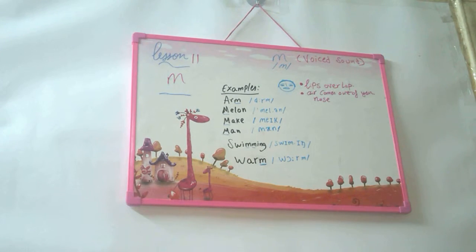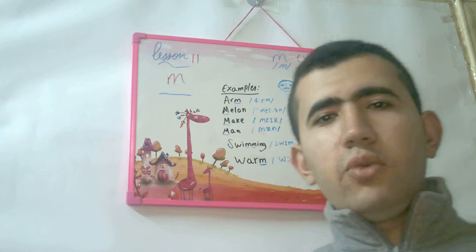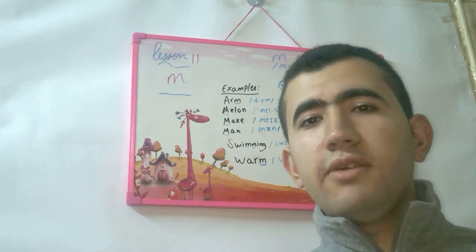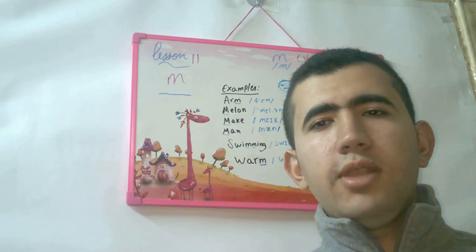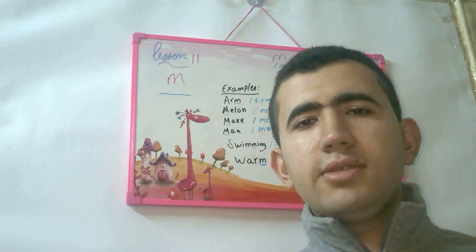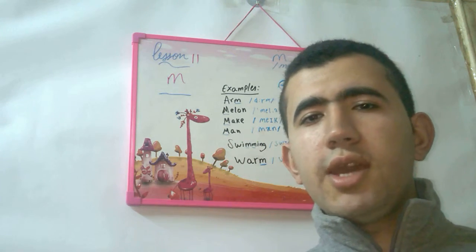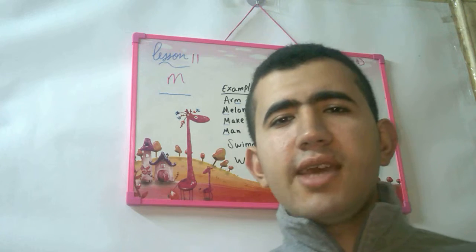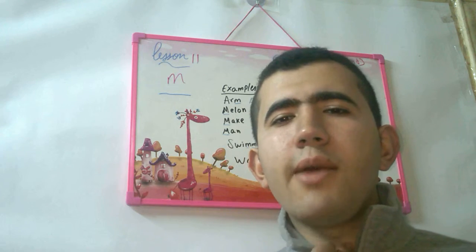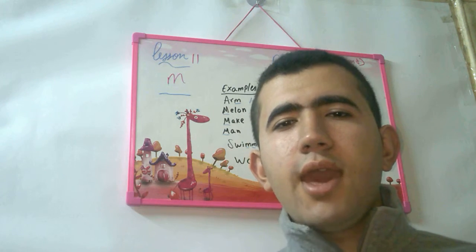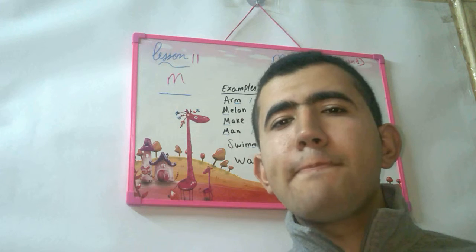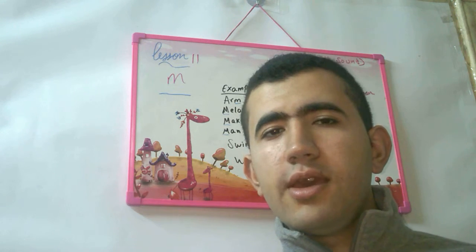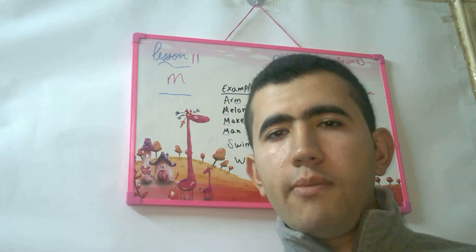Hello everyone in the world, how are you doing today? It's me Zaki from Learn English Online page on Facebook. Let's talk about today the M letter, which has a sound. When you make this sound, your vocal cords vibrate, your lips overlap, and the air comes out of your nose. Remember that.